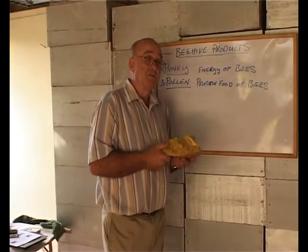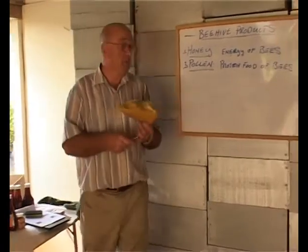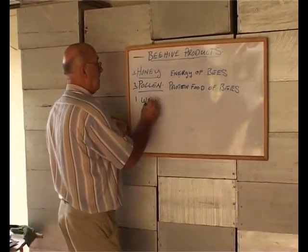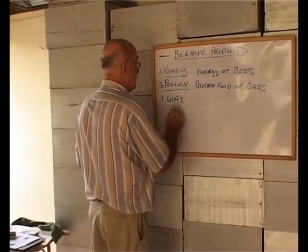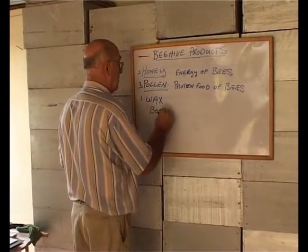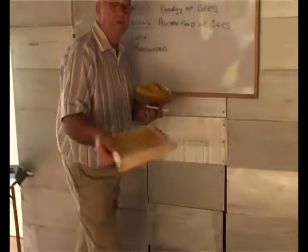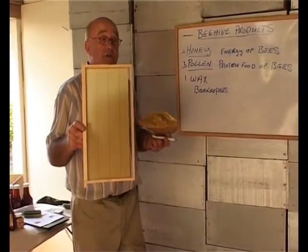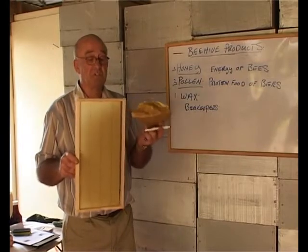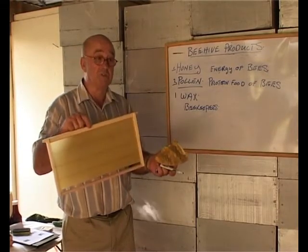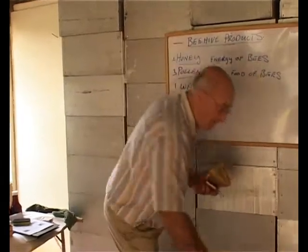Beekeepers should save their surplus wax as it has a market. One key use for beeswax is by beekeepers themselves to make comb foundation — the wax foundation is created by melting and milling the raw wax in a machine to turn it into sheets of wax. These sheets are used by all beekeepers as the foundation for new combs in their hives, as a natural beeswax base which the bees can build on to make a honeycomb.